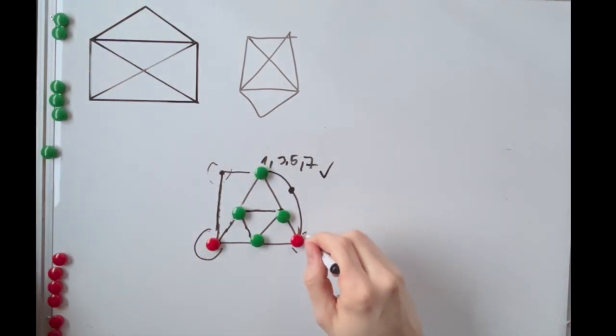If there are two odd nodes, it means the shape can be drawn without lifting your hand. However, you must start at one odd node and end at the other.